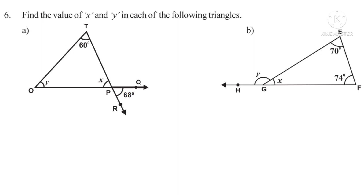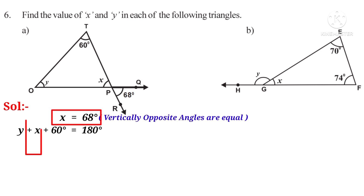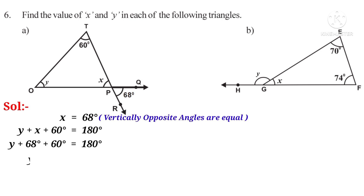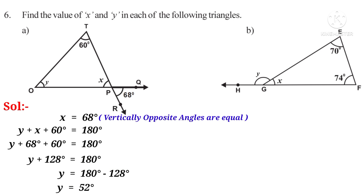Sixth problem: Find the value of X and Y in each of the following triangles. In the first triangle, X = 68° because vertically opposite angles are equal. Then Y + 68° + 60° = 180°, so Y = 180° − 128° = 52°. The value of X is 68 degrees and Y is 52 degrees.